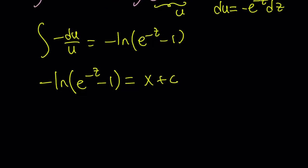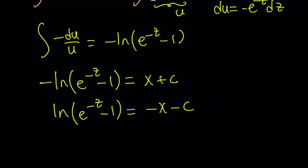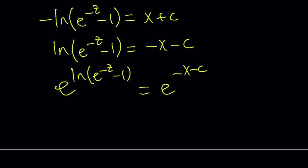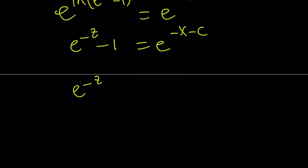Let's multiply both sides by negative 1, giving us negative x minus c. To get rid of the ln, we take e to the power of both sides. So e to the power ln of (e to the power negative z minus 1) equals e to the power of negative x minus c. Since e to the power ln of something is just that something, we get e to the power negative z minus 1 equals e to the power of negative x minus c. From here we isolate e to the power negative z and write it as e to the power negative x minus c plus 1.